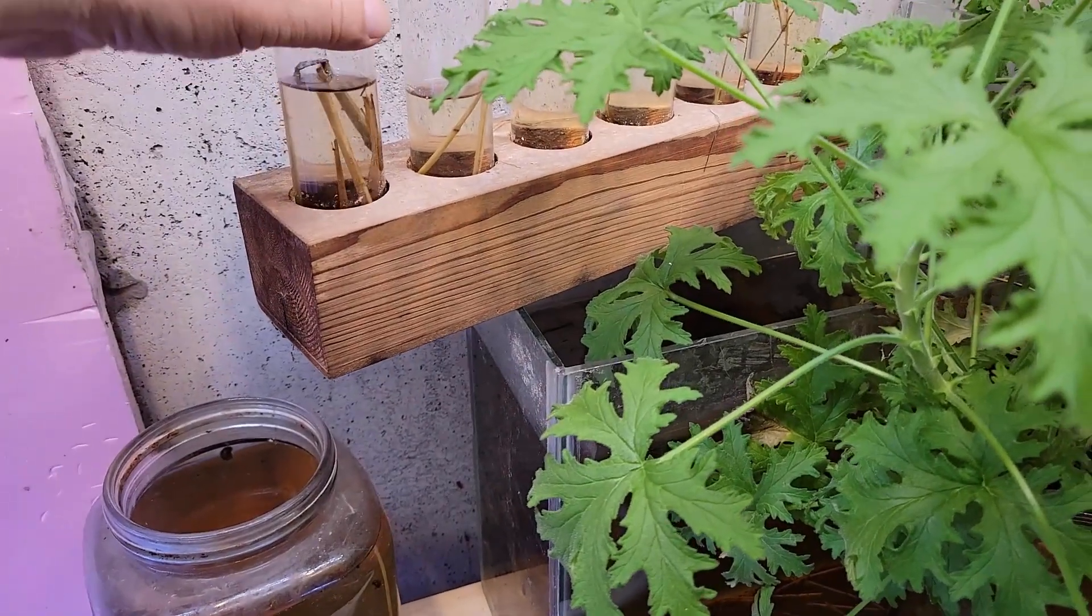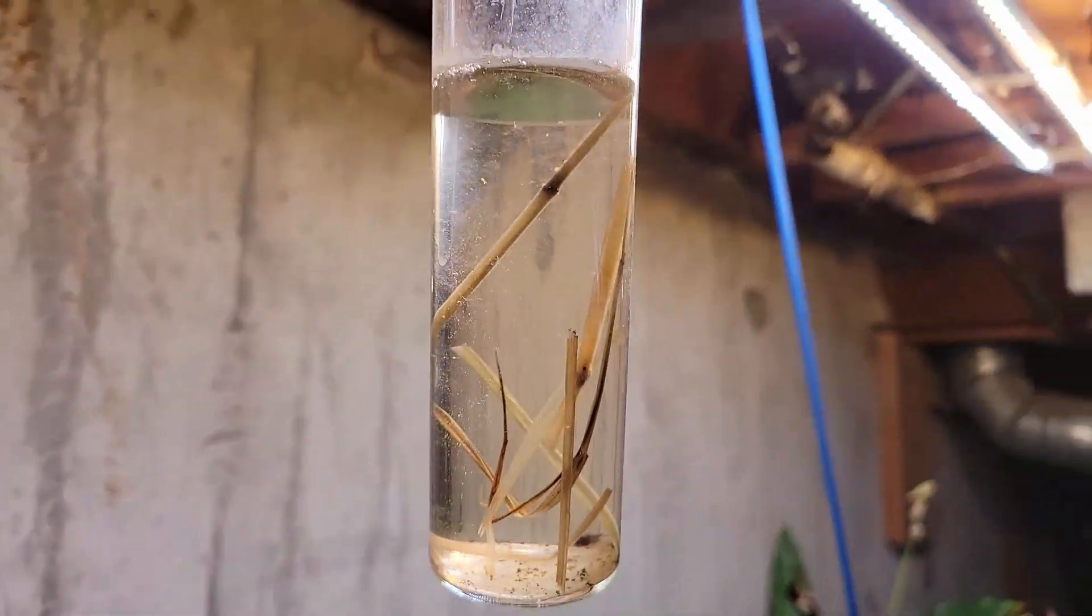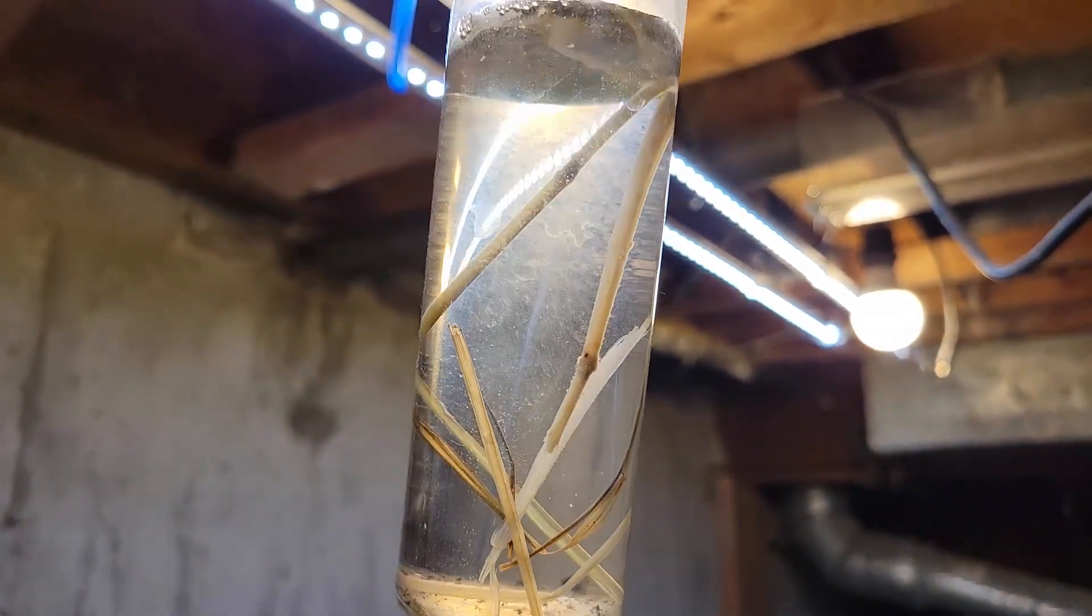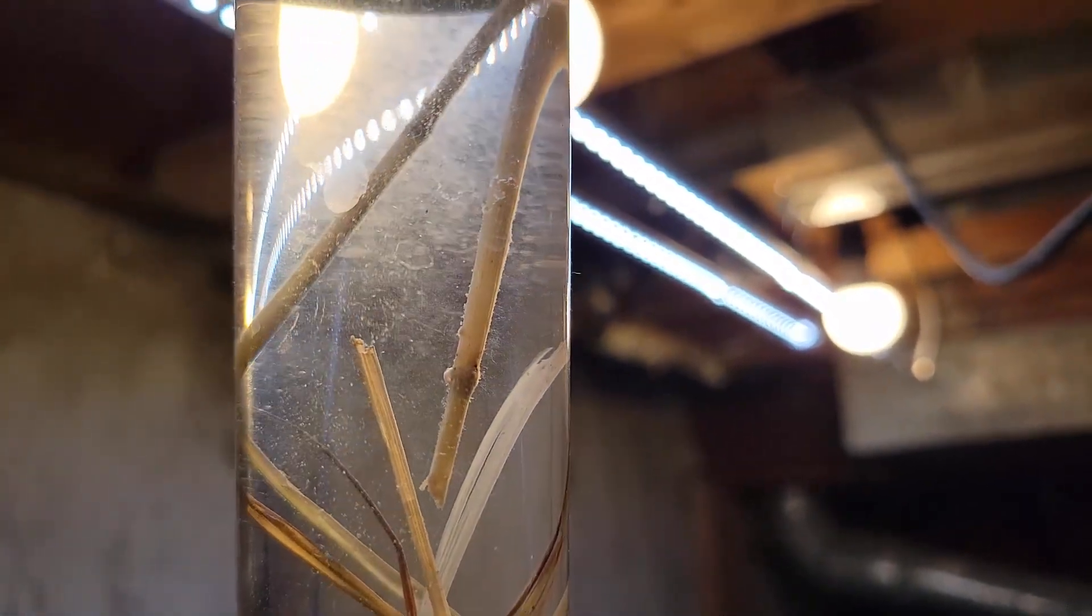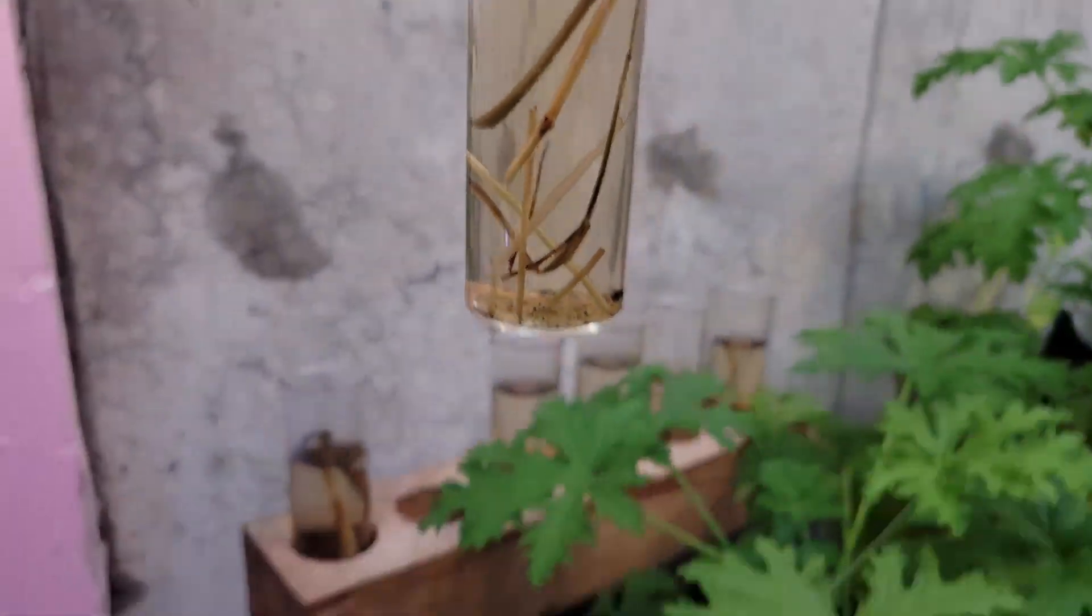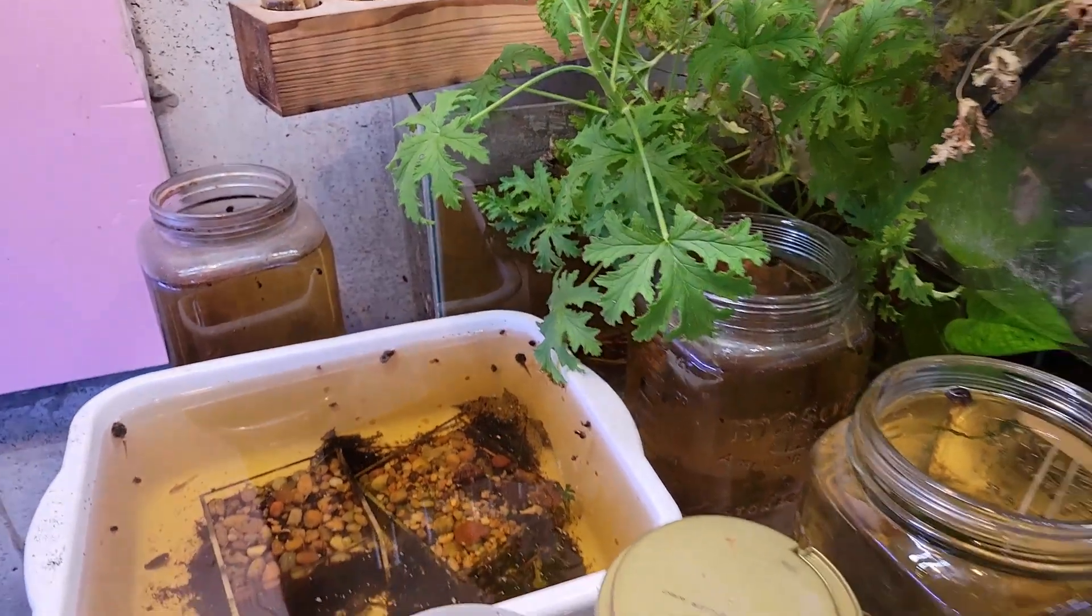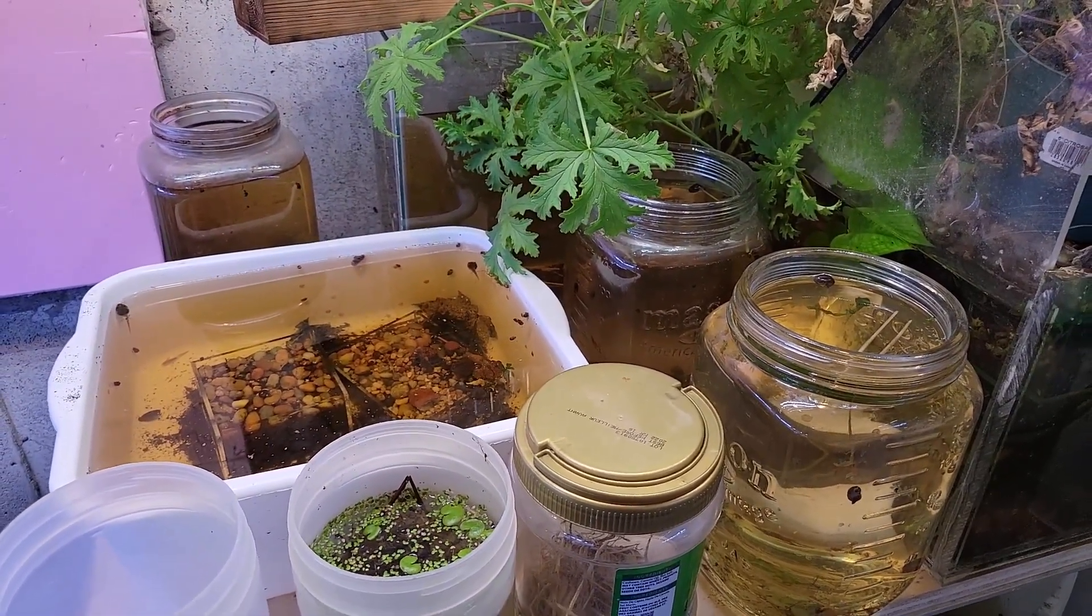These right now are a mix of cyclops and paramecia, and I want to get a pure paramecium culture going this year, which is the reason for this. If you look very closely, you'll see a little bit of a swirling cloud, kind of about one third up from the bottom of that tube, and that is the paramecia. So I'm going to keep subculturing that until I get a pure culture.